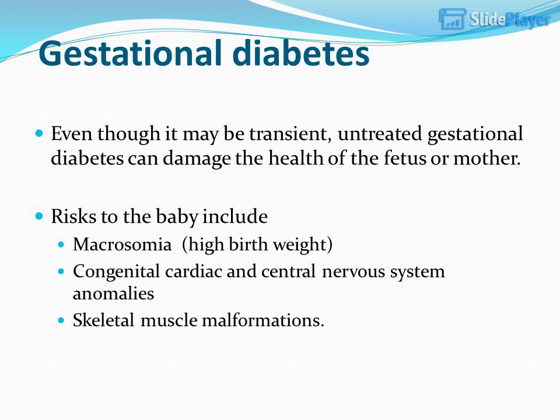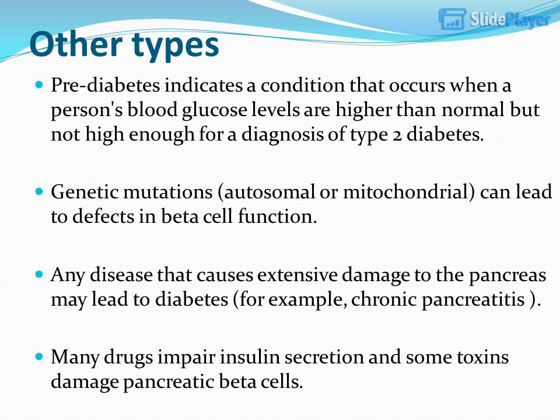Even though it may be transient, untreated gestational diabetes can damage the health of the fetus or mother. Risks to the baby include macrosomia (high birth weight), congenital cardiac and central nervous system anomalies, and skeletal muscle malformations.